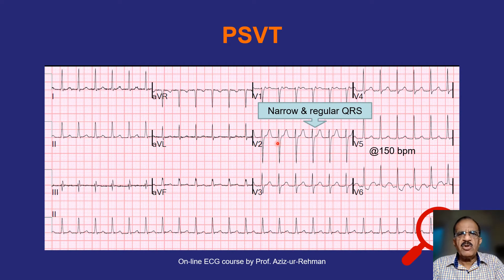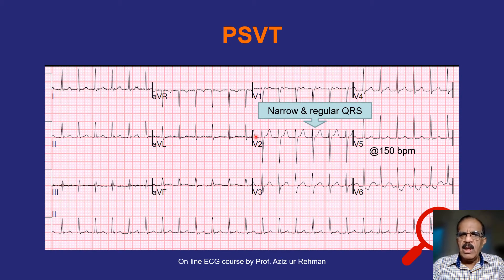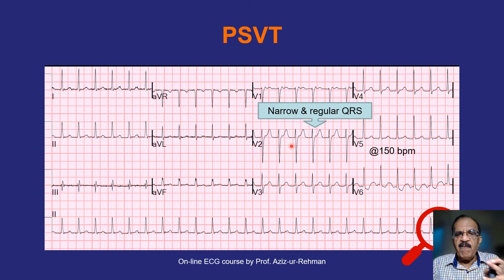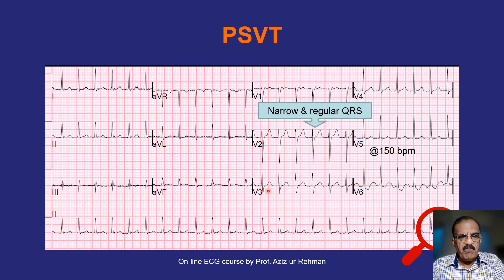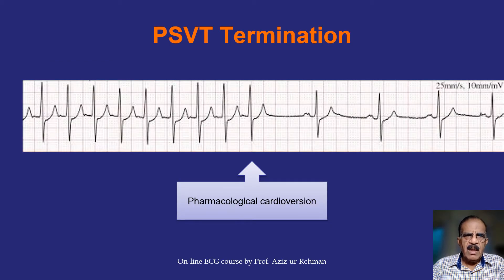This is SVT — possibly junctional tachycardia, since many SVTs are junctional. In paroxysmal SVT, you may see a P wave before or after the QRS complex; in this case it is after. In the majority of cases, the P wave is merged into the QRS and not visible, as was the case in the previous example. This is another example of paroxysmal SVT.